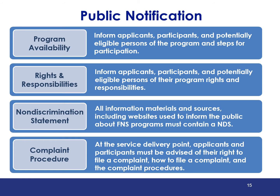The program availability component must inform applicants, participants, and potentially eligible persons of the availability of the program, along with steps necessary for participation. Applicants, participants, and potentially eligible persons must be informed of their program rights and responsibilities. All information materials and sources used to inform the public about FNS programs must contain the non-discrimination statement, including websites from local education agencies, school food authorities, other subrecipients such as CACFP sponsors, and the state agency. Applicants and participants must be advised at the service delivery point of their right to file a complaint, how to file a complaint, and the complaint procedures.